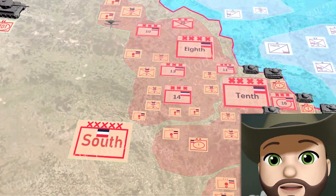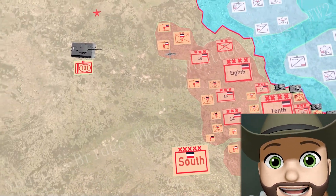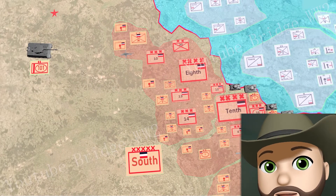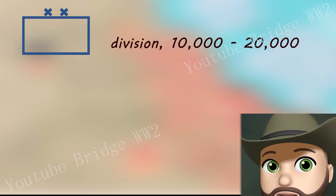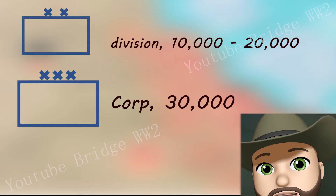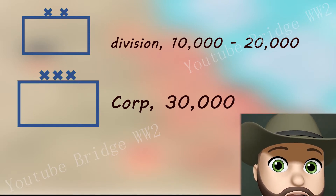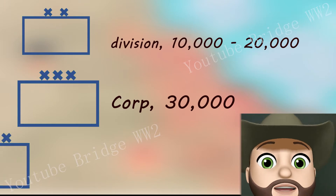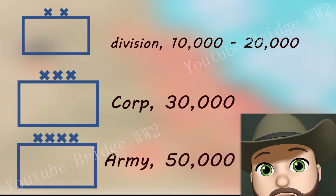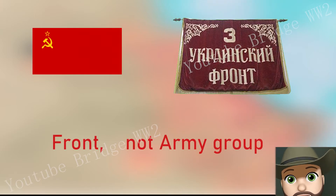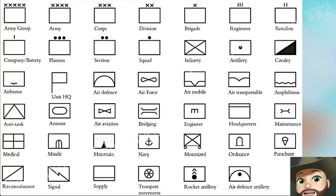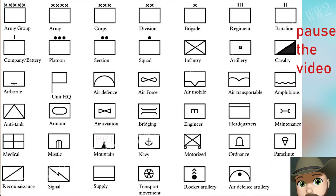Now let's move on to the most important part. You'll see several crosses above the icons of each military unit on the map. Two crosses represent division level units, which usually consist of 10,000 to 20,000 men. Three crosses represent corps level units, usually 30,000 or more. Four crosses represent army units, usually above 50,000. The number of people and names of military units of the same rank will differ by country. For example, the Soviet Union's 3rd Ukrainian Front is different from the army group that we use. This table contains all military formations and their corresponding military symbols.